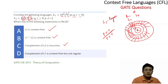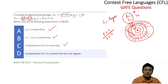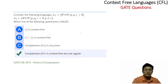Option D says the complement of L1 is context-free but not regular. However, the complement of any regular language is always regular — regular languages are closed under complementation. So this statement is false. Therefore, option D is the correct answer to select (as the false statement).